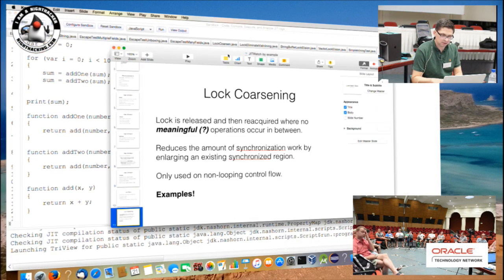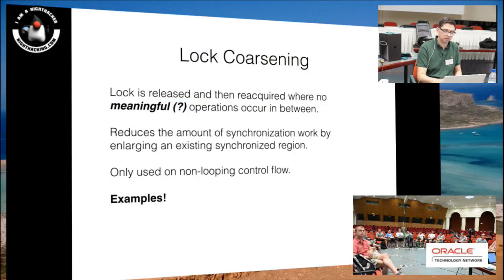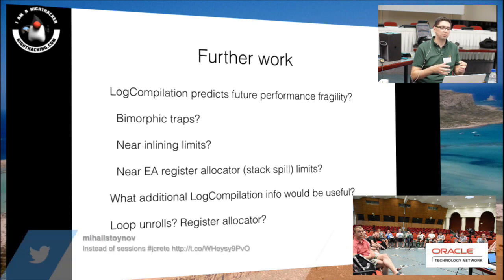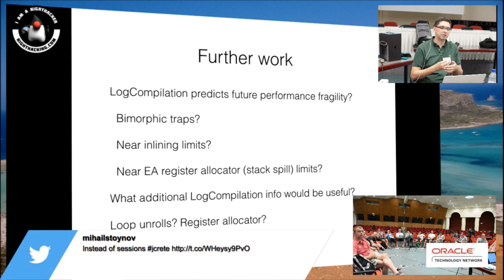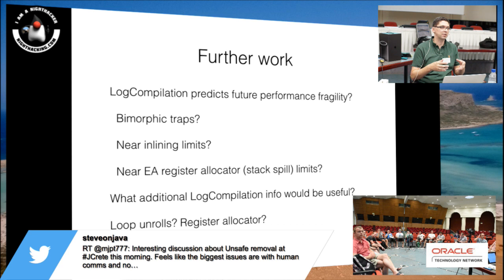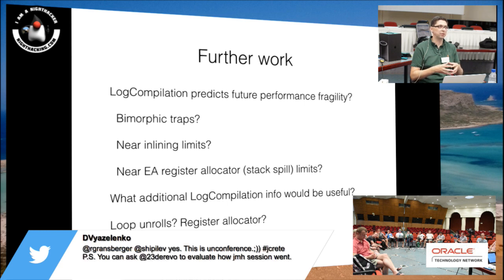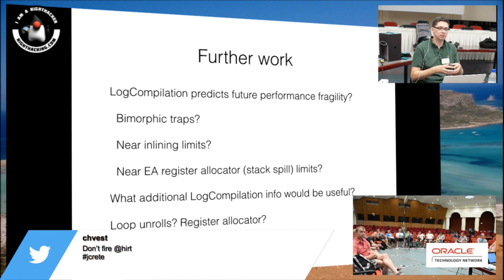Thinking about what else JitWatch could do to be more useful for developers: could information in the log compilation output predict future performance fragility? For example, are many of your methods guarded by bimorphic uncommon traps — you've seen two implementations at runtime — and if you accidentally add a third, you're going to blow your call-site inlining limit? Another potential hint: counting up the sizes of inline methods in the call chain and warning a developer that adding one more log statement to this method will blow the inlining chain and cause a performance loss.